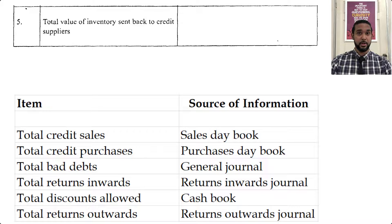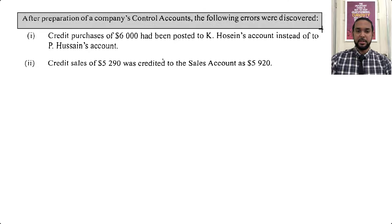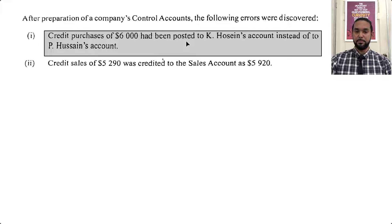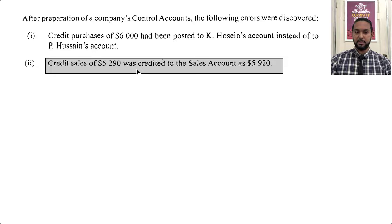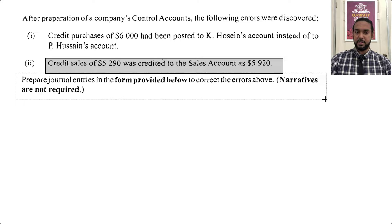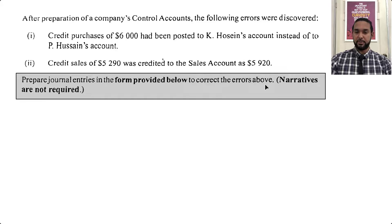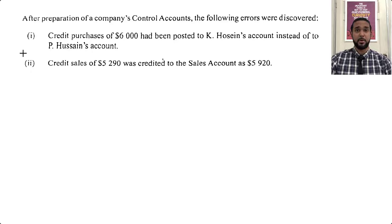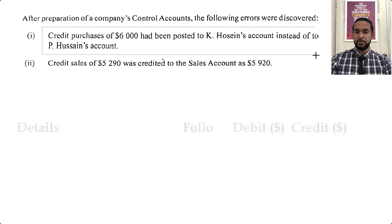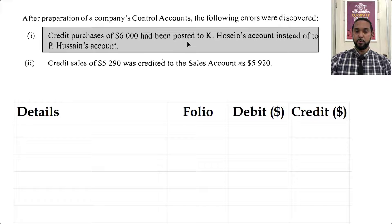Let's take a look at the last part of the question. After preparation of a company's control accounts, the following errors were discovered. The first item says credit purchases of 6,000 had been posted to K Hosein's account instead of to P Hosein's account. The second item: credit sales of 5,290 were credited to the sales account as 5,920. Prepare the journal entries to correct the errors — narratives are not required.